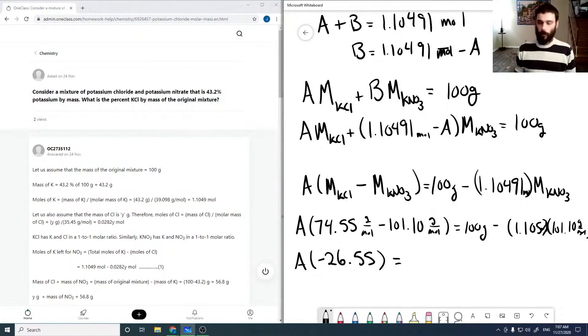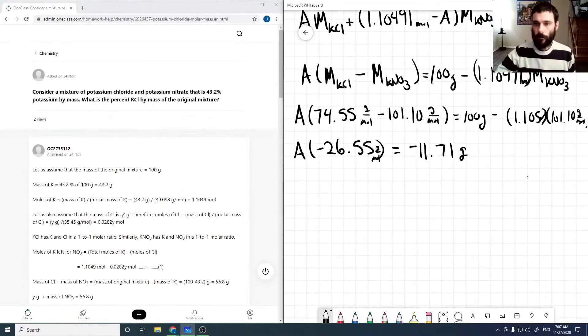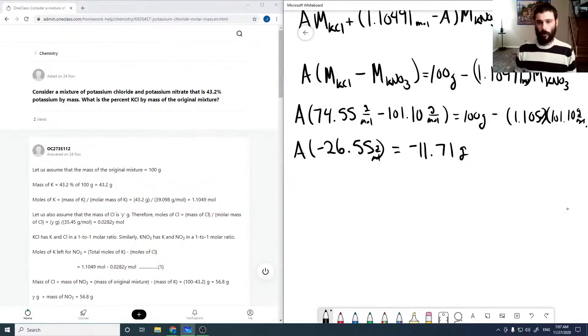And so, and then this here is going to be A times minus 26.55 is equal to, is equal to—and on this side if we do that through is minus 11.71, and that's in grams per mole. And so our A, doing that division, comes out to be 0.44102 moles.